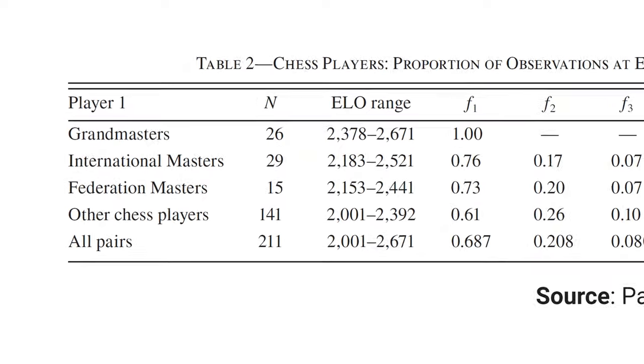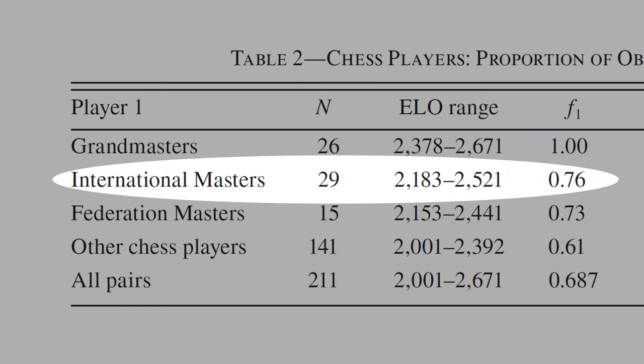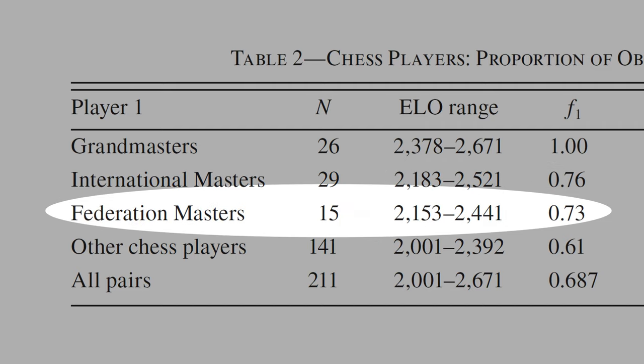Now let's see how chess players play the centipede game. All grandmasters stopped at the first node — they are the rational economic agents described by economic theory. International masters are near-rational: 76% stopped at the first node. Federation masters are similar; 73% of federation masters stopped at the first node.